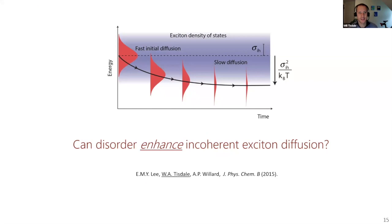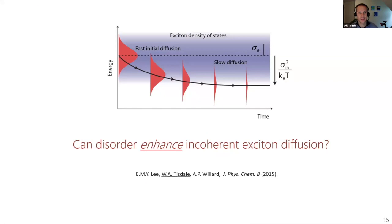So one of the questions this led us to ask is, can disorder actually enhance incoherent exciton diffusion? At the time we were thinking about this, a lot of work was being done exploring the effect of disorder on coherent exciton transport. We were asking the question in the purely incoherent limit. This exciton diffusivity is faster initially than it is at later times. You can think of this initially formed exciton population as having some excess free energy. It's out of equilibrium locally with its own energy landscape. Can that excess free energy be used to do some work to enhance the transport in the system? This question was very difficult to address experimentally.